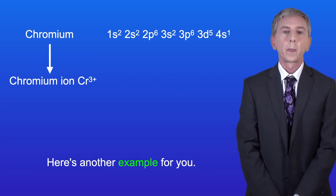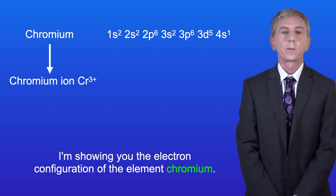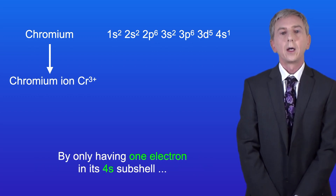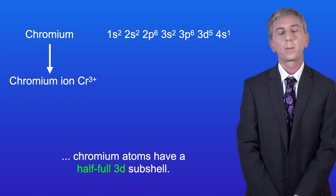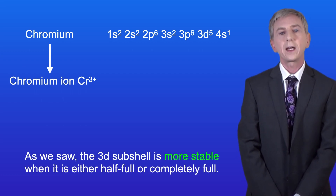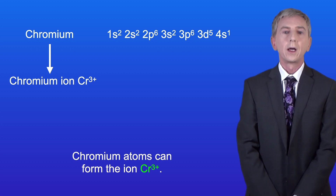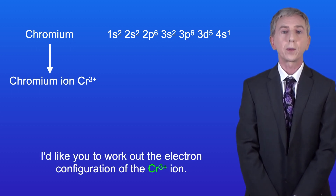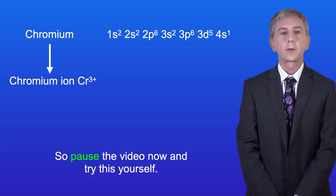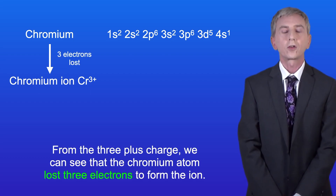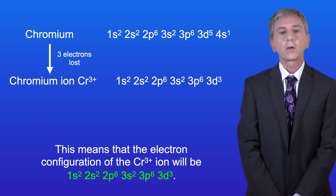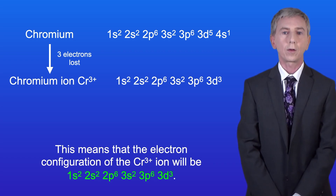Here's another example for you. I'm showing you the electron configuration of the element chromium. We've already seen that chromium has an unusual electron configuration. By only having one electron in its 4s subshell, chromium atoms have a half full 3d subshell, and the 3d subshell is more stable when it's either half full or completely full. Chromium atoms can form the ion Cr3+. I'd like you to work out the electron configuration of the Cr3+ ion, so pause the video now and try this yourself. From the 3 plus charge, we can see that the chromium atom lost three electrons to form the ion. This means that the electron configuration of the Cr3+ ion will be 1s2, 2s2, 2p6, 3s2, 3p6, 3d3.